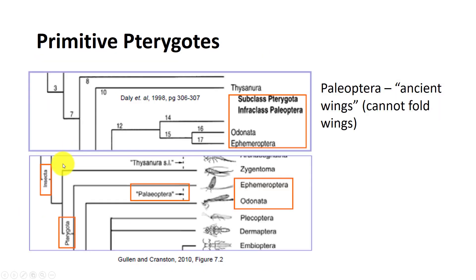Now we are going to move into the primitive Pterygota, which means they do have wings. The Infraclass Paleoptera is a group that cannot fold their wings, so they don't have a flexion. It contains insects with aquatic nymphs or naiads.